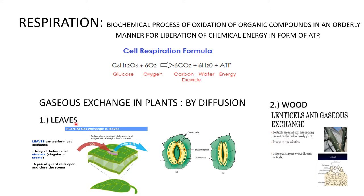Through leaves, gaseous exchange takes place through stomata. These are the tiny pores which are known as stomata and they are guarded by guard cells which help in opening and closing of the pore. In wood, it takes place through lenticels, as you can see over here.